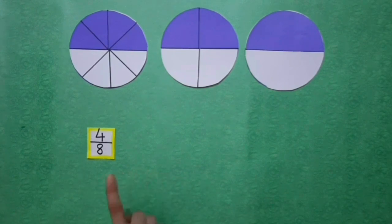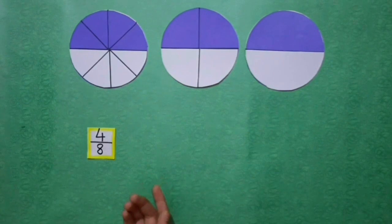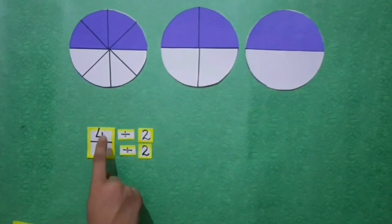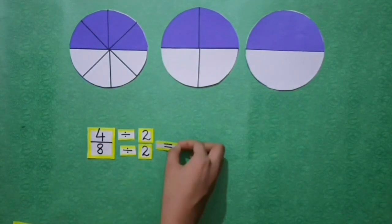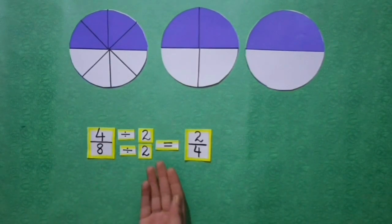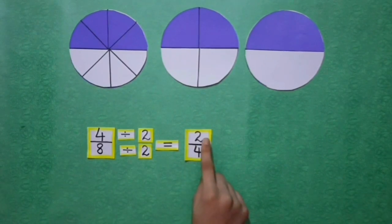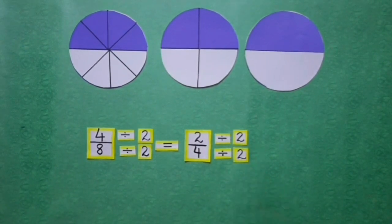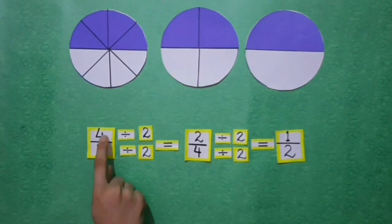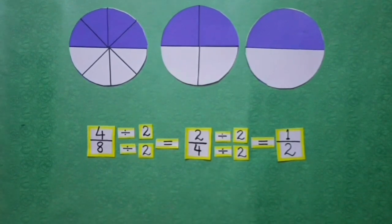Students, in 4 upon 8, numerator 4 and denominator 8 can both be divided by 2. So on dividing 4 and 8 by 2, we get the fraction 2 upon 4. Now 4 upon 8 and 2 upon 4 are both equivalent fractions. In 2 upon 4, can we divide both numerator and denominator by a number other than 1? Yes, by 2. On dividing by 2, we get the fraction 1 upon 2. So 4 upon 8 is equal to 2 upon 4 and 2 upon 4 is equal to 1 upon 2. These are all equivalent fractions.